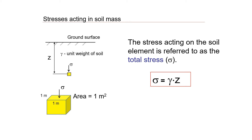This video will explain how to estimate stresses acting in a soil mass. Looking at a diagram of a soil element at depth z, with an area of one square meter, we can estimate the total stress acting on this soil element as the unit weight of the soil multiplied by the depth z.